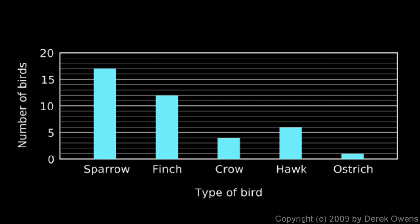Now we're going to talk about bar graphs — sometimes called bar charts. Here's an example: farmer Bob spent some time sitting on his front porch and recorded all the birds he saw. The results are summarized in this bar graph. You can see the different types of birds along the bottom: sparrows, finches, crows, hawks, and ostriches.